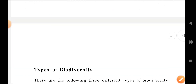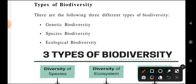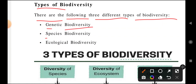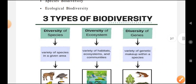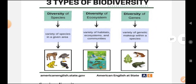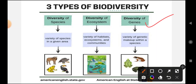After the introduction, let us look at the types of biodiversity. There are three different types of biodiversity: genetic biodiversity, species biodiversity, and ecological biodiversity. Genetic biodiversity relates to genes and genetic makeup. Species biodiversity refers to classification based on the nature of species. Ecosystem or ecological biodiversity encompasses everything related to environmental conditions.